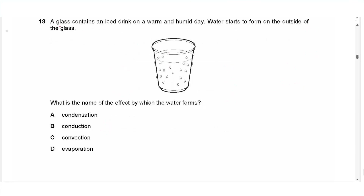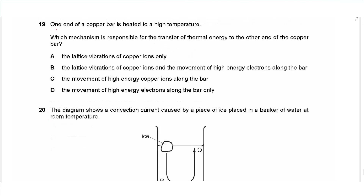Question 18: A glass containing an iced drink is on a warm, humid day and water forms on the outside of the glass. This is water vapor converting to liquid water, which is condensation.